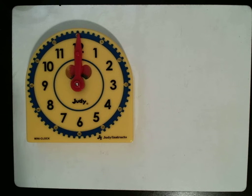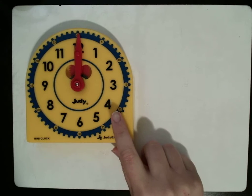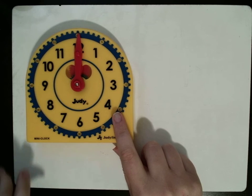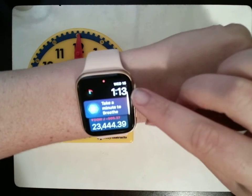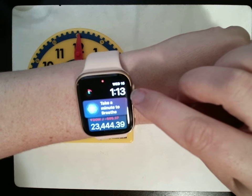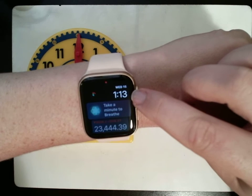There are two types of clocks that you can look at. The one that's most difficult would be this type, which is an analog clock. You also have a digital clock, which would look like this. And this one's pretty easy because it just tells you what time it is.